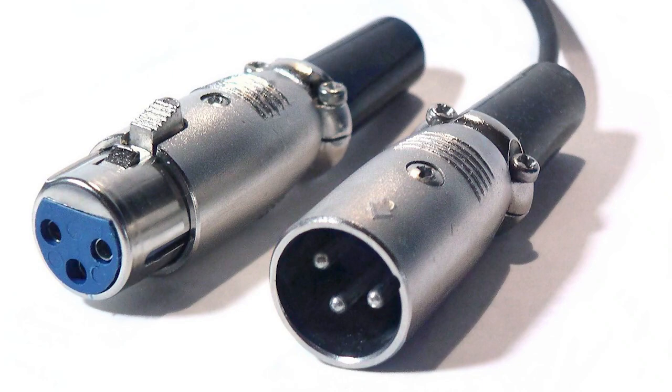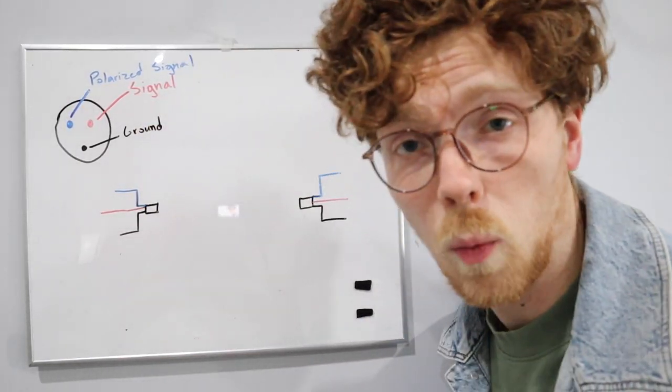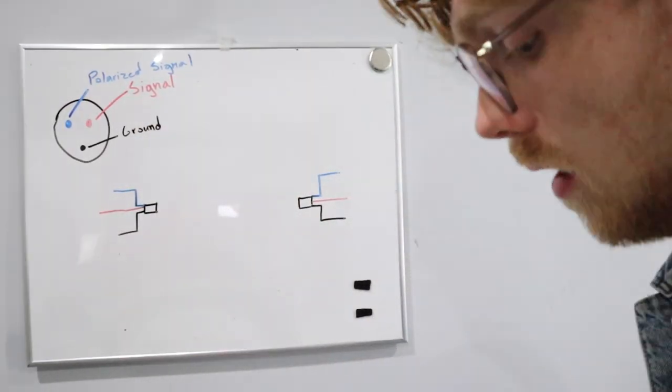The next thing in the chain, working backwards towards the microphone, would be the XLR cable — the thing that gives the microphone its name. In order to describe the XLR cable, we're going to go over to the whiteboard and do some diagramming. Welcome to the whiteboard. Let's discuss how an XLR works.